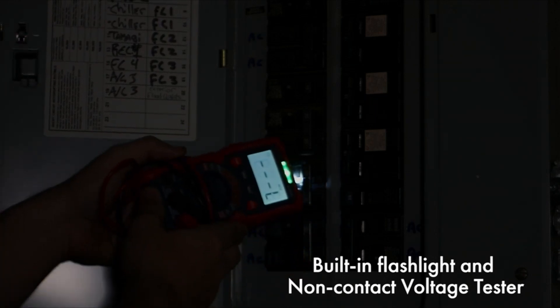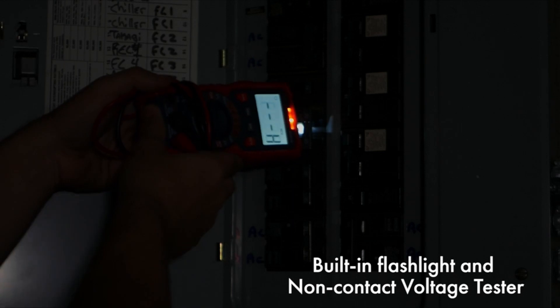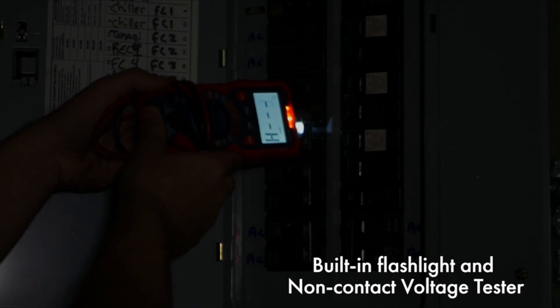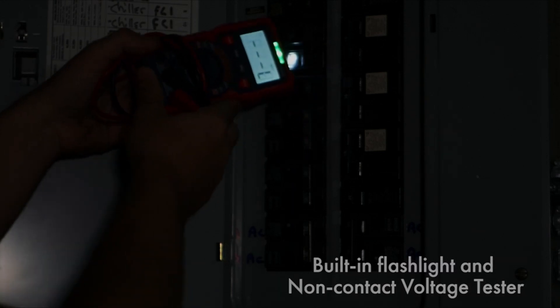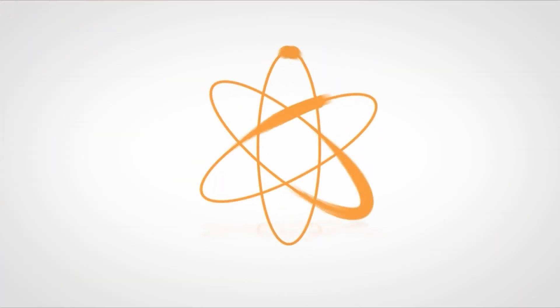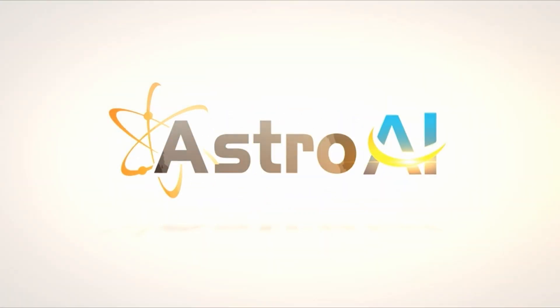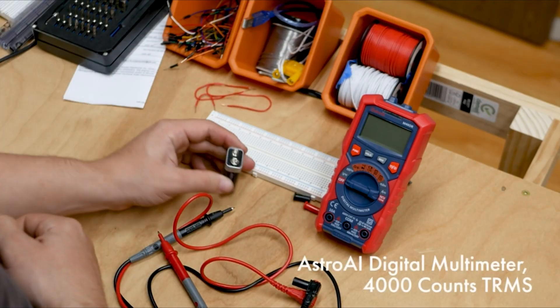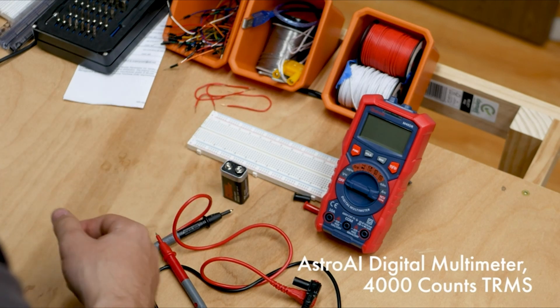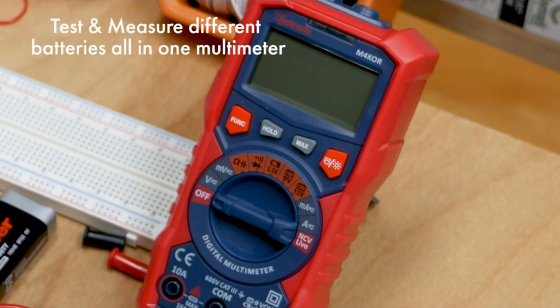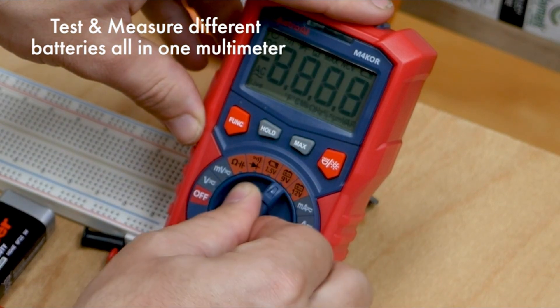In conclusion, the Astro-AI M4 QR Multimeter stands out as an exemplary choice for those seeking the best budget multimeter. With its reliable and accurate measurements of AC-DC voltage, current, and resistance, coupled with a non-contact voltage testing function featuring sound and light alarms, this multimeter offers a comprehensive set of features.